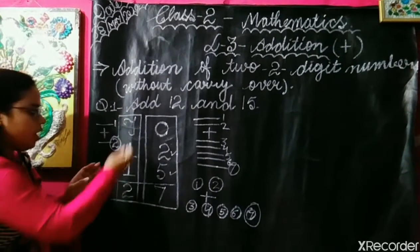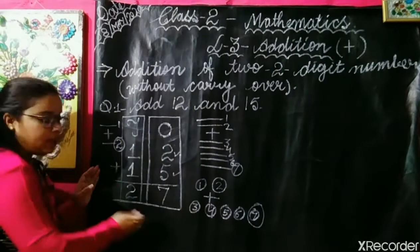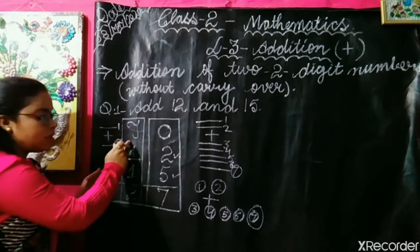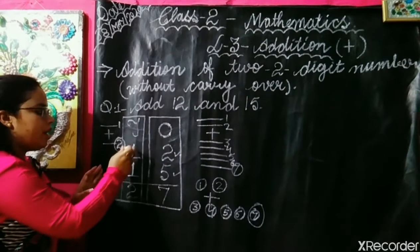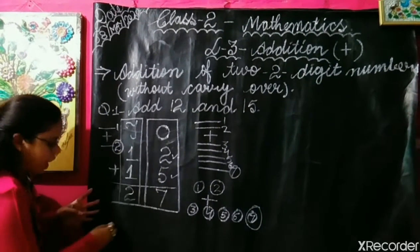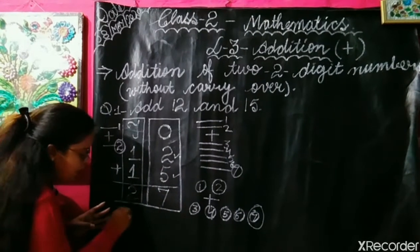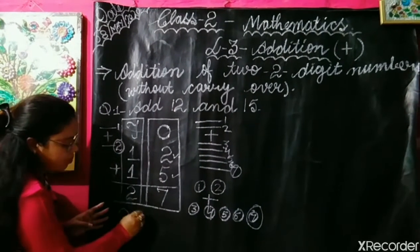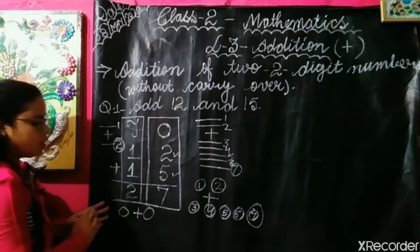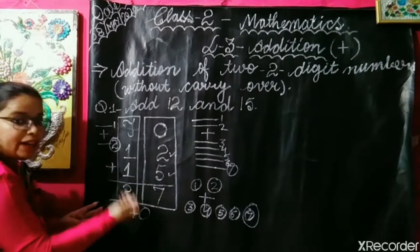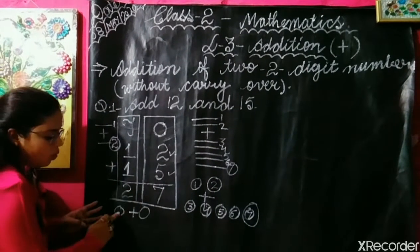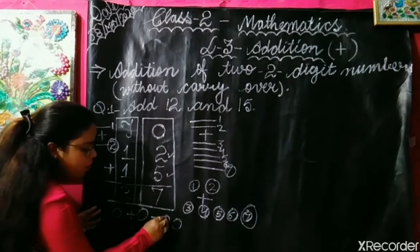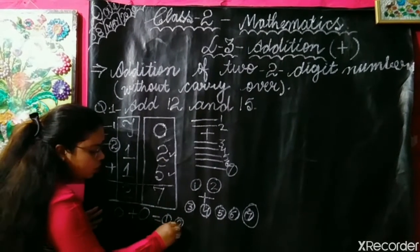Now we are going to solve the tens part in our second method. This is the tens column. Here 1 is written, so draw 1 circle. Then again here 1 is written, so plus 1 circle. We add them together — 1 plus 1 is equal to 2 circles. These are our final answers which I have already written here.